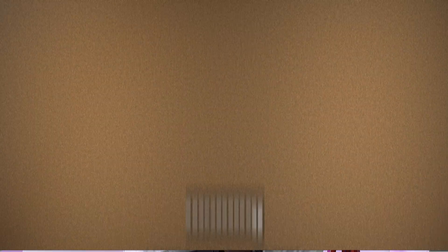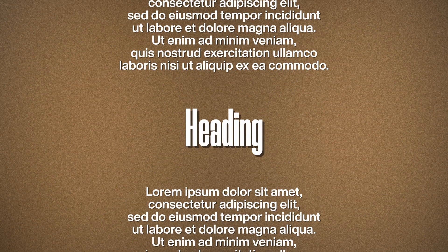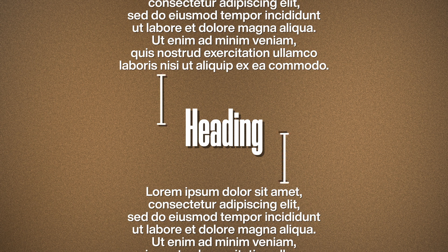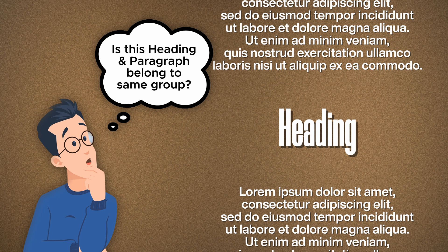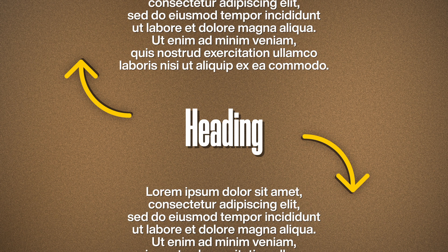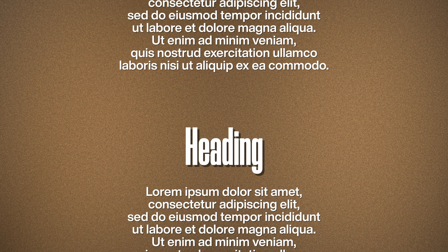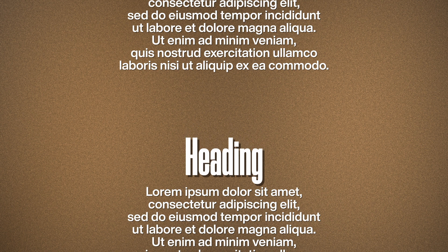Let's look at some UI examples. When you look at a heading and body content that are far apart, it's hard to perceive them as one group — you can't tell which group the heading belongs to. But if we fix the spacing and bring the heading closer to the content below, suddenly they look like a group.